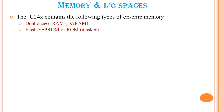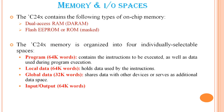The C24X contains the following types of on-chip memory: dual-access RAM memory, flash EEPROM or ROM, and mask-type ROM memory. The C24X memory is organized into four individually selectable spaces.